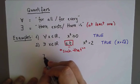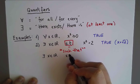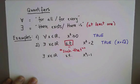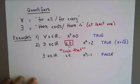By contrast, if I write the following statement: there exists a real number x such that x² is minus one. And this is false. The square of a real number is never negative.